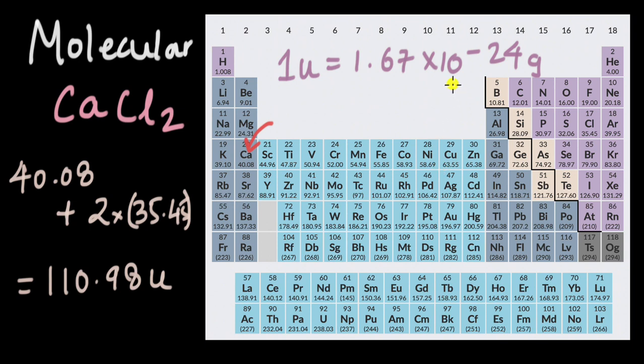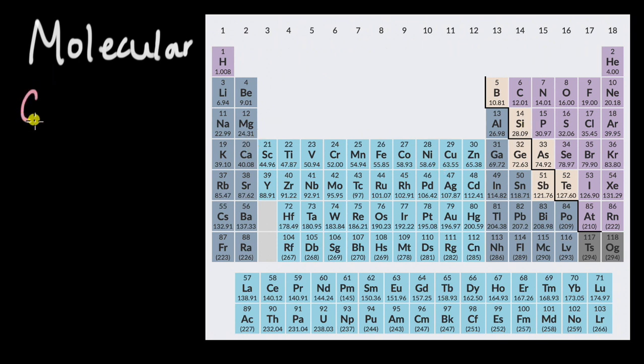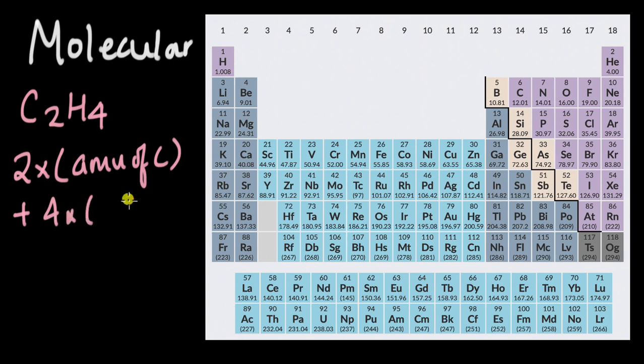Now let's have a look at some more molecules. So now we have C2H4. This is ethene. Now this one has two types of atoms, carbon and hydrogen, but it has two carbon atoms and four hydrogen atoms. And molecular weight is the sum of the atomic masses of all the atoms in that molecule.